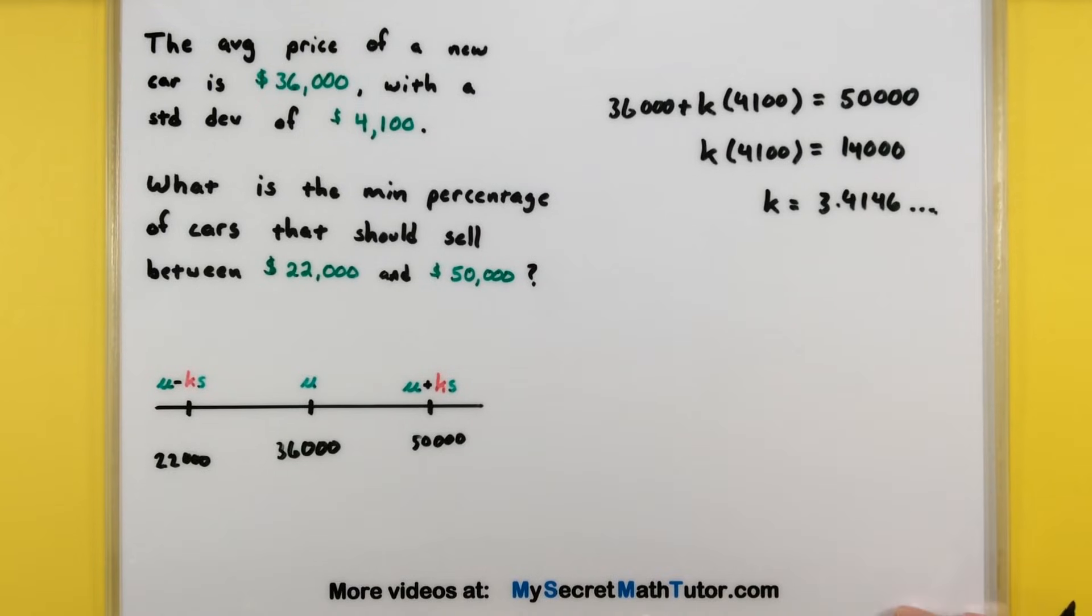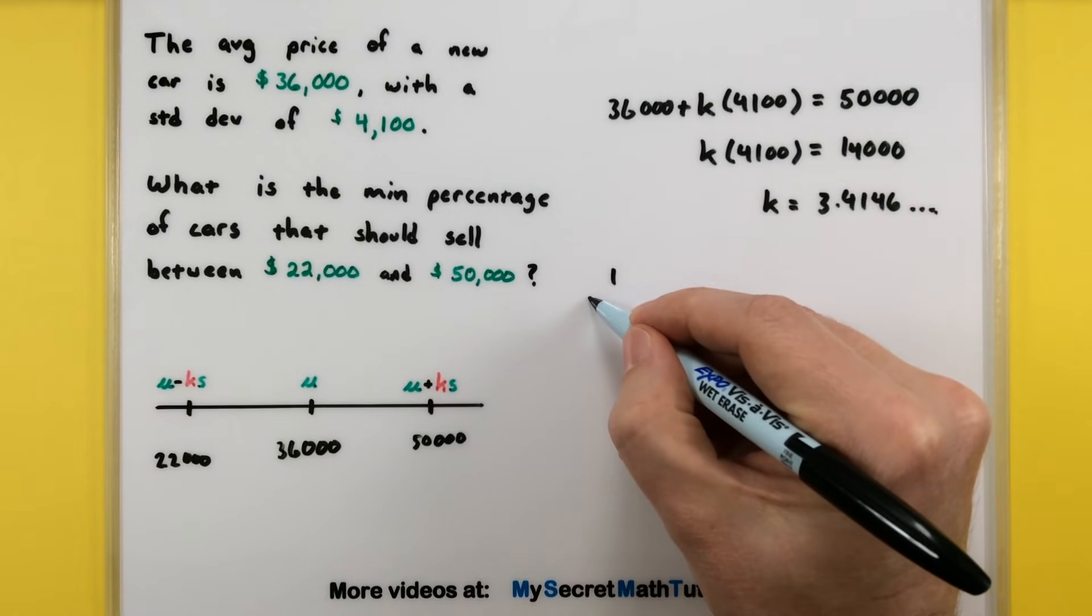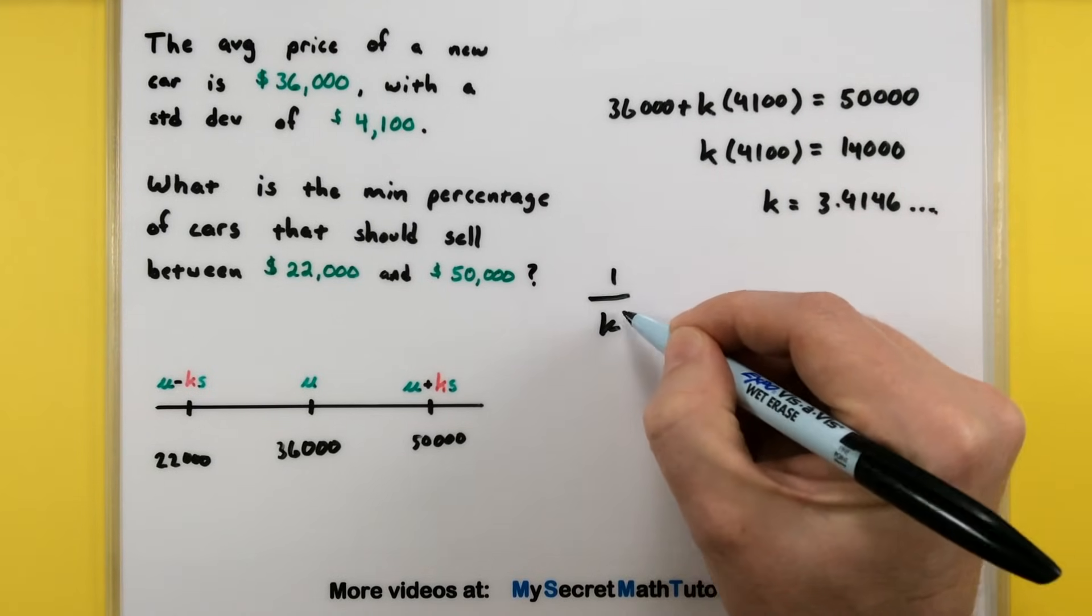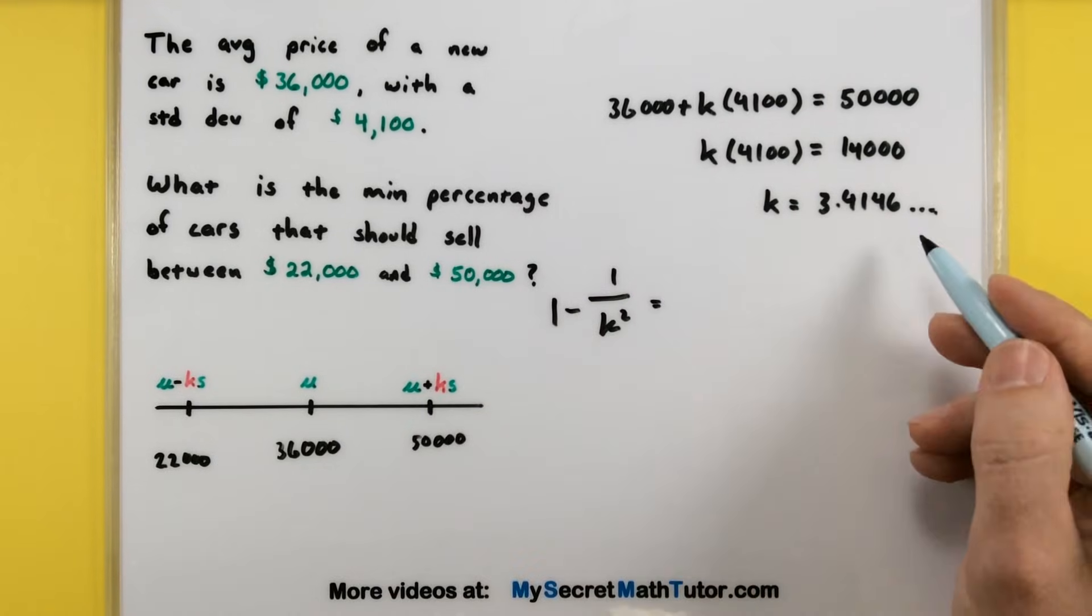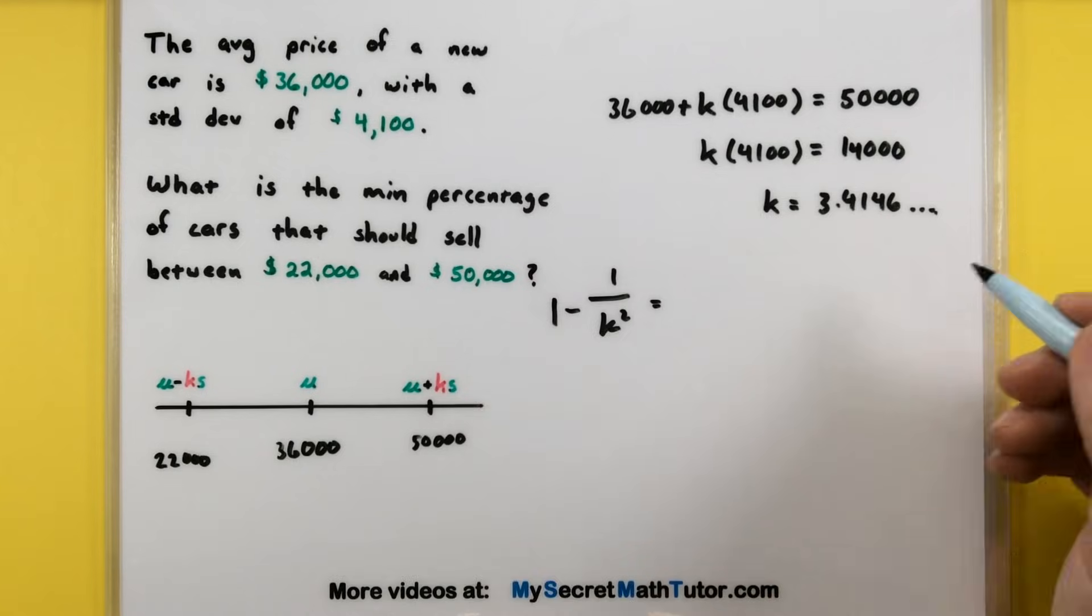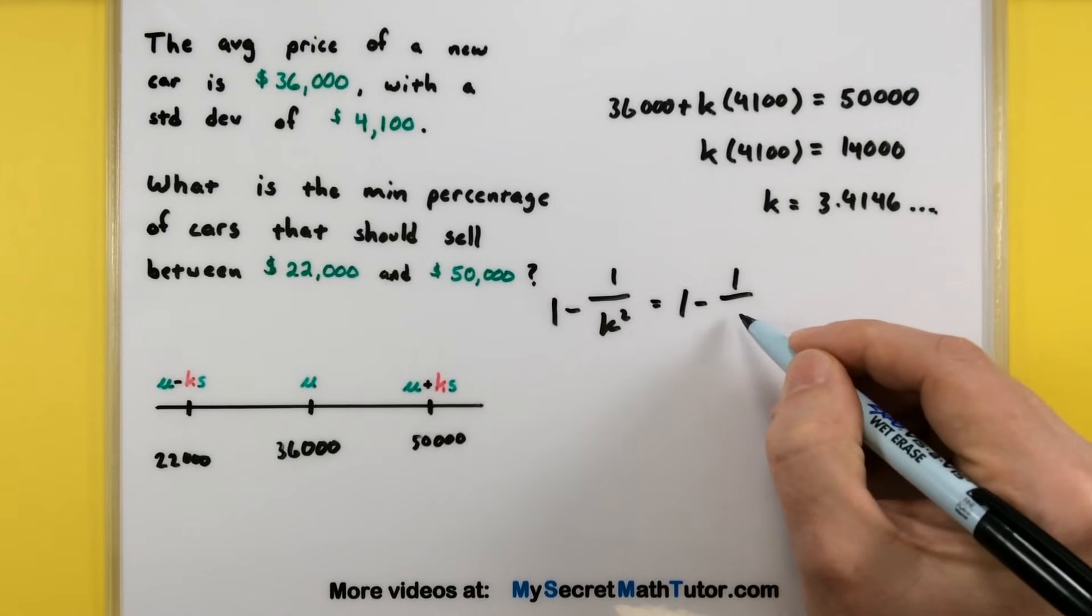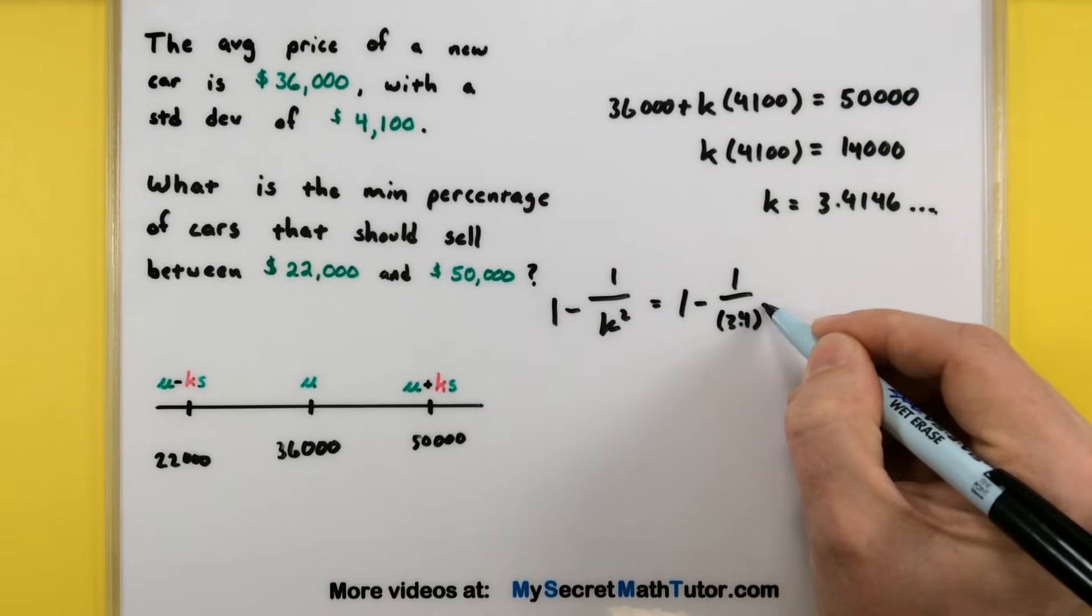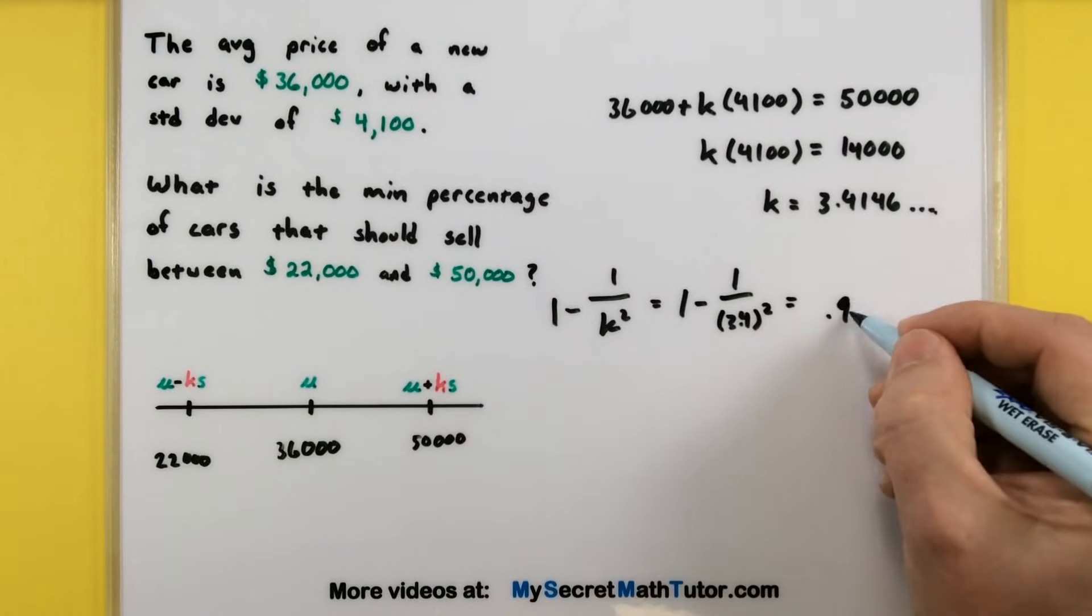All right, now that we have the standard deviation now we can use Chebyshev's to give us that percentage. So remember that's 1 minus 1 over k squared. So we have the number of standard deviations. So this will be 1 minus 1 over 3, let's just make it 3.4 squared. And that'll give us 0.913.